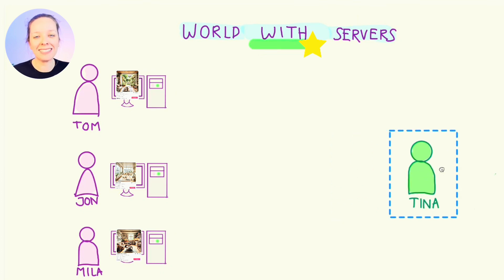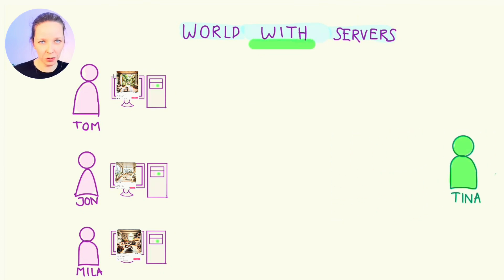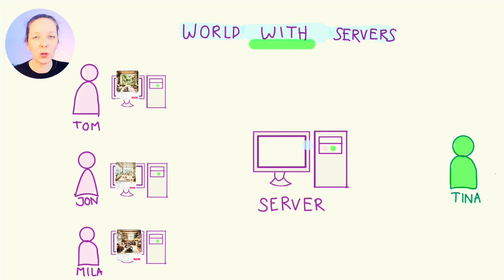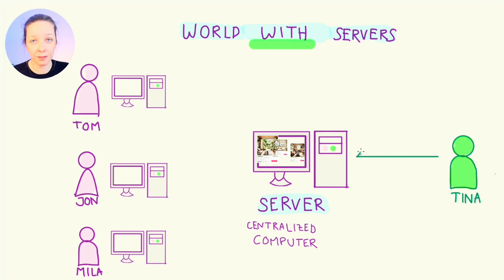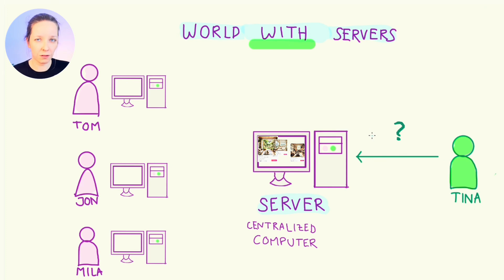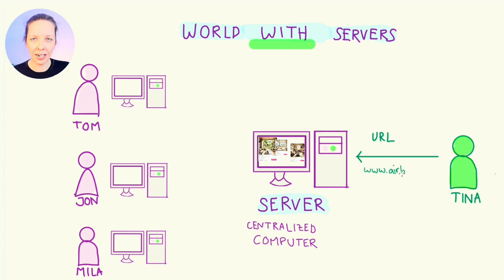Instead of everyone keeping their info on their own separate computers, Tom, John and Mila are going to save the information on a centralized computer — the server. Now Tina doesn't have to hunt down Tom, John and Mila for their apartment information. She can just access the server. Tina does not need to know where the server is located physically, but what she needs to know is the digital address of the server, which in that case is the URL: Airbnb.com.